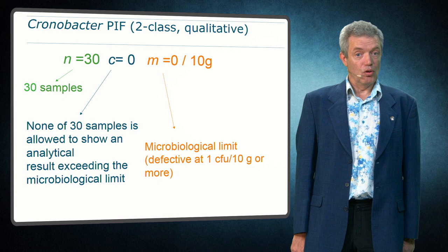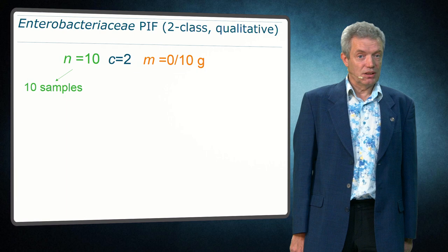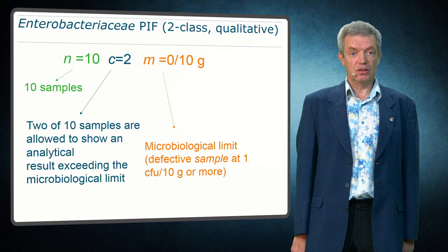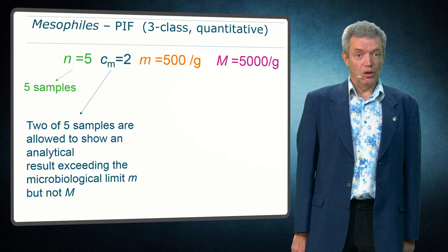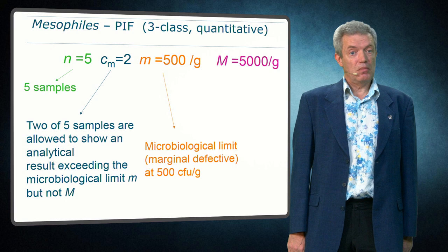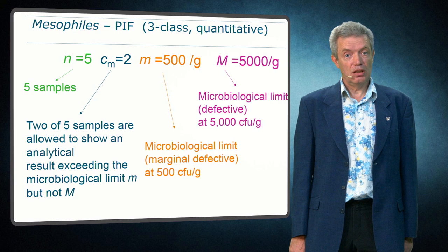All these values need to be defined. For Enterobacteriaceae N equals 10 samples; two can be positive and the microbiological limit is absence in 10 grams. For mesophiles the number of samples is five. Two of the five samples can be between the limits small m and big M, and the small m and big M are microbiological limits that now are given in a quantitative way — so it is not a presence-absence test, but counts.